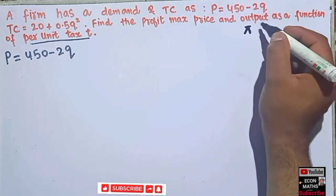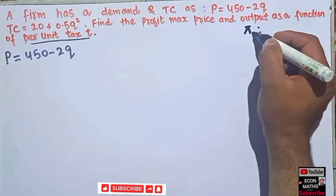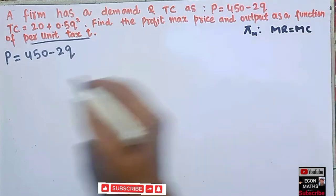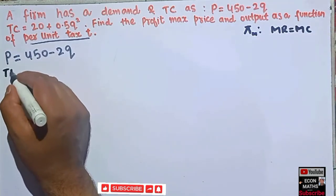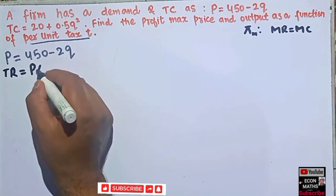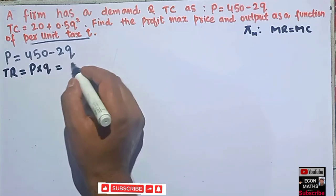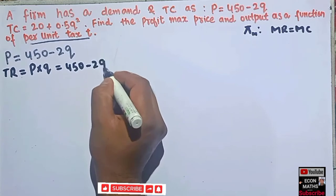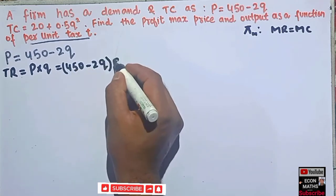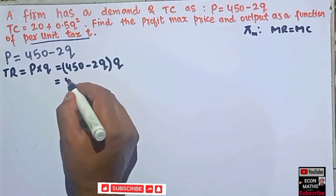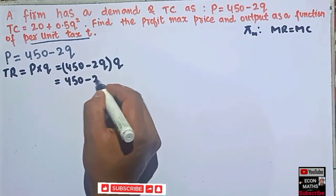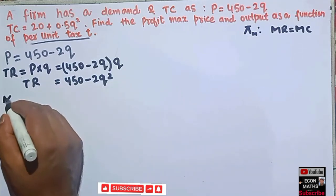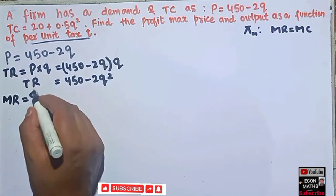We know the profit-maximizing condition is that marginal revenue should equal marginal cost. First we find total revenue: TR = price times quantity = (450 minus 2q) times q = 450q minus 2q squared. Marginal revenue is simply the derivative of total revenue with respect to quantity.